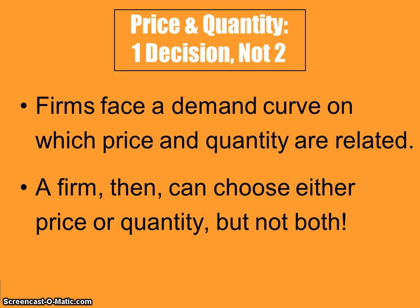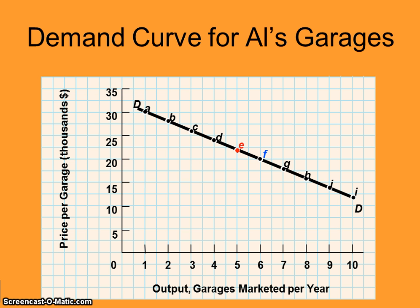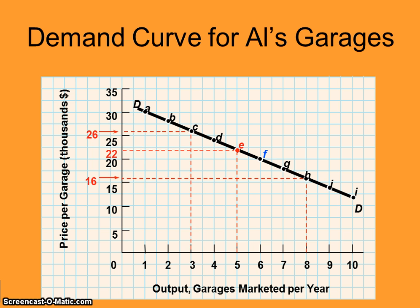We'll see through our analysis that it's actually smarter to choose the profit-maximizing quantity of sales and then reference the demand curve for price. For Al's Garages, if Al decided he wanted to sell three garages per year, he would need to charge $26,000 per garage. If he wanted to sell eight, he could charge $16,000; if he wanted to sell five, he could charge $22,000. You have to reference the demand curve for the second piece of the puzzle.